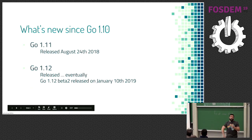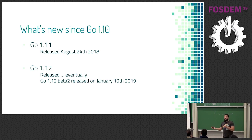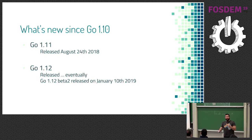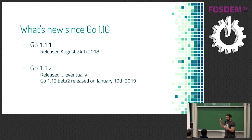We're going to be talking about everything that happened since last time I gave this talk, which means Go 1.11 and Go 1.12. Go 1.11 was released on August 24th, 2018, and Go 1.12 was released sometime soon — but a beta 2 was released January 10th. Note that if you run some code on the playground, it will not work because the playground is still running Go 1.11.